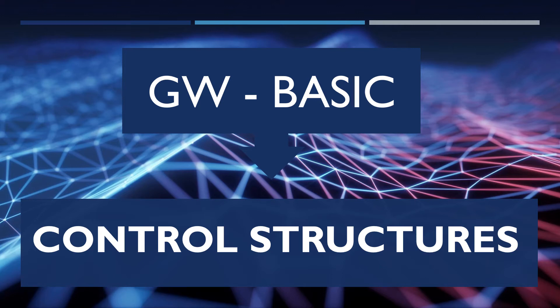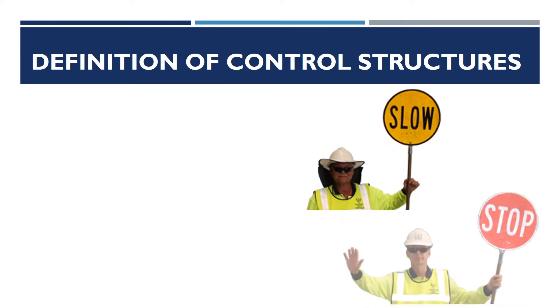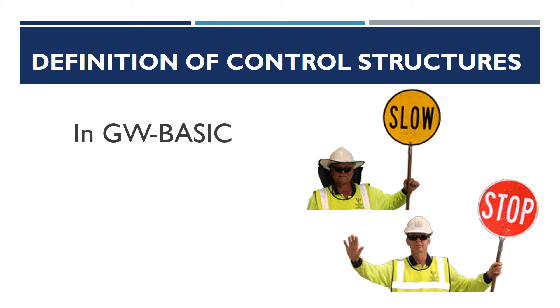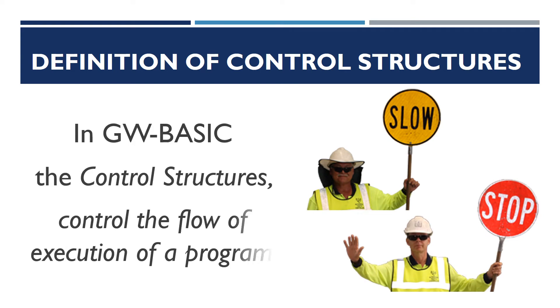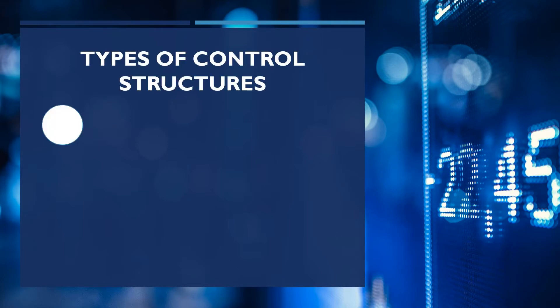From GW BASIC, today we are going to learn control structures. Like the traffic policeman controls the flow of traffic on the roads, similarly in GW BASIC the control structures control the flow of execution of a program. Control structures are basically a line or a set of lines that control the flow of a program. There are three types of control structures.